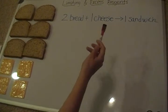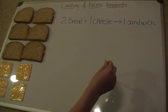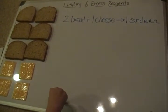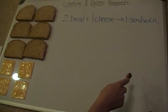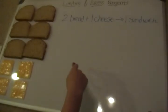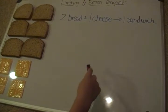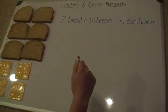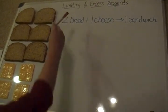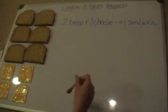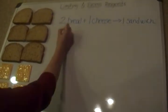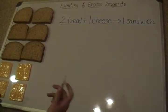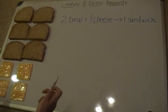The excess reagent is going to be the reactant that we have more than enough of — so at the end, we're going to have some of this left over. First of all, we have to figure out how many sandwiches we can make, then figure out which one of our two reactants, our bread or our cheese, limits us to making that number of sandwiches, and which one we have in excess. Keep in mind that the limiting and excess reagents have to be reactants — either your bread or your cheese. It's not going to be sandwiches; that's a product.